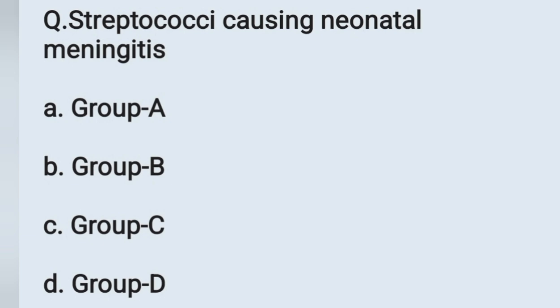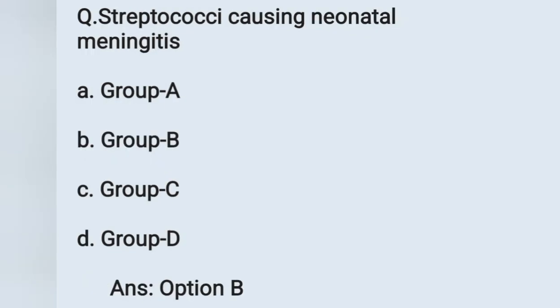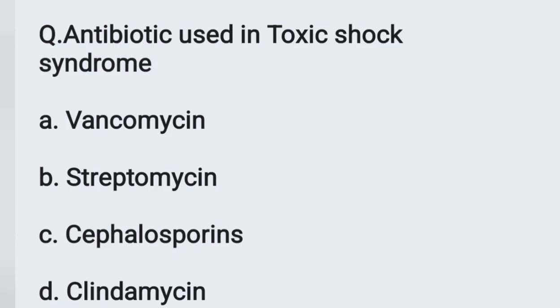The next question: Streptococcus causing neonatal meningitis is — option A: group A, option B: group B, option C: group C, option D: group D. Group B Streptococcus causes neonatal meningitis. Option B is the correct answer.